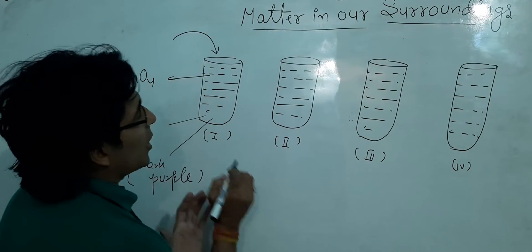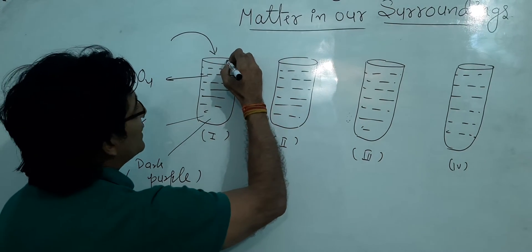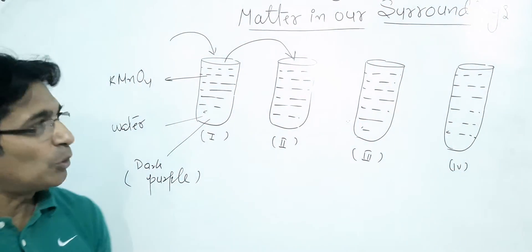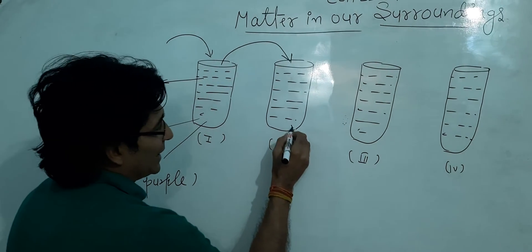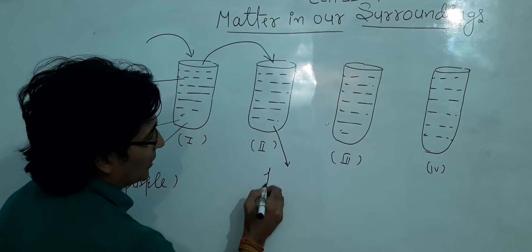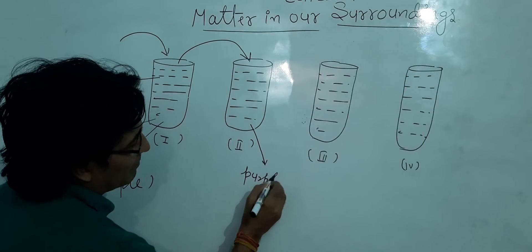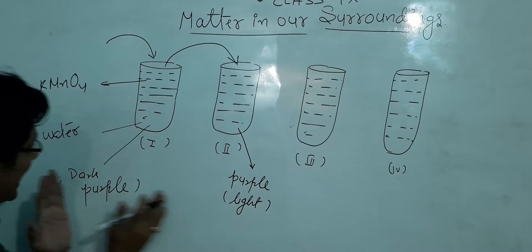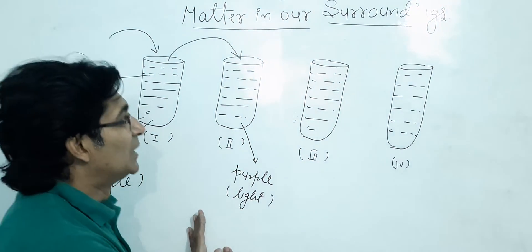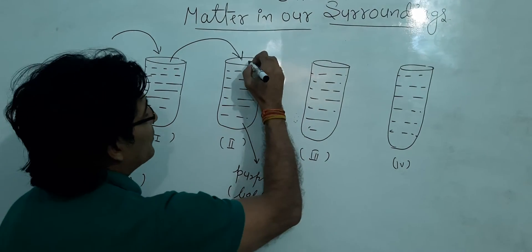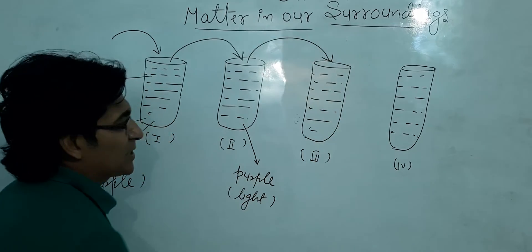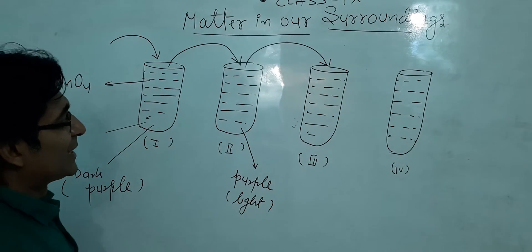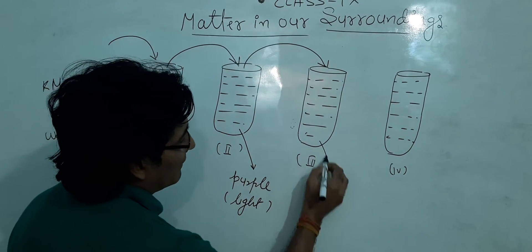Now, if we take few drops of water from test tube number one and pour it into test tube number two, you will see the color of the water here also becomes purple. But this is somewhere lighter than test tube one. Now again, if we pour the water of test tube one into test tube three, then you see that this also becomes very light.